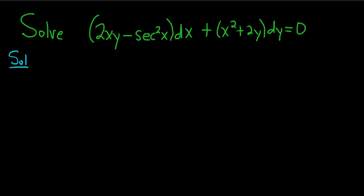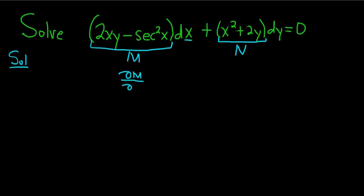To check, you call this piece here capital M and you call this piece right here capital N. Then you compute the following partial derivative: del M with respect to the other variable. There's an x here, so we're going to compute del M del y — the partial derivative of M with respect to y.